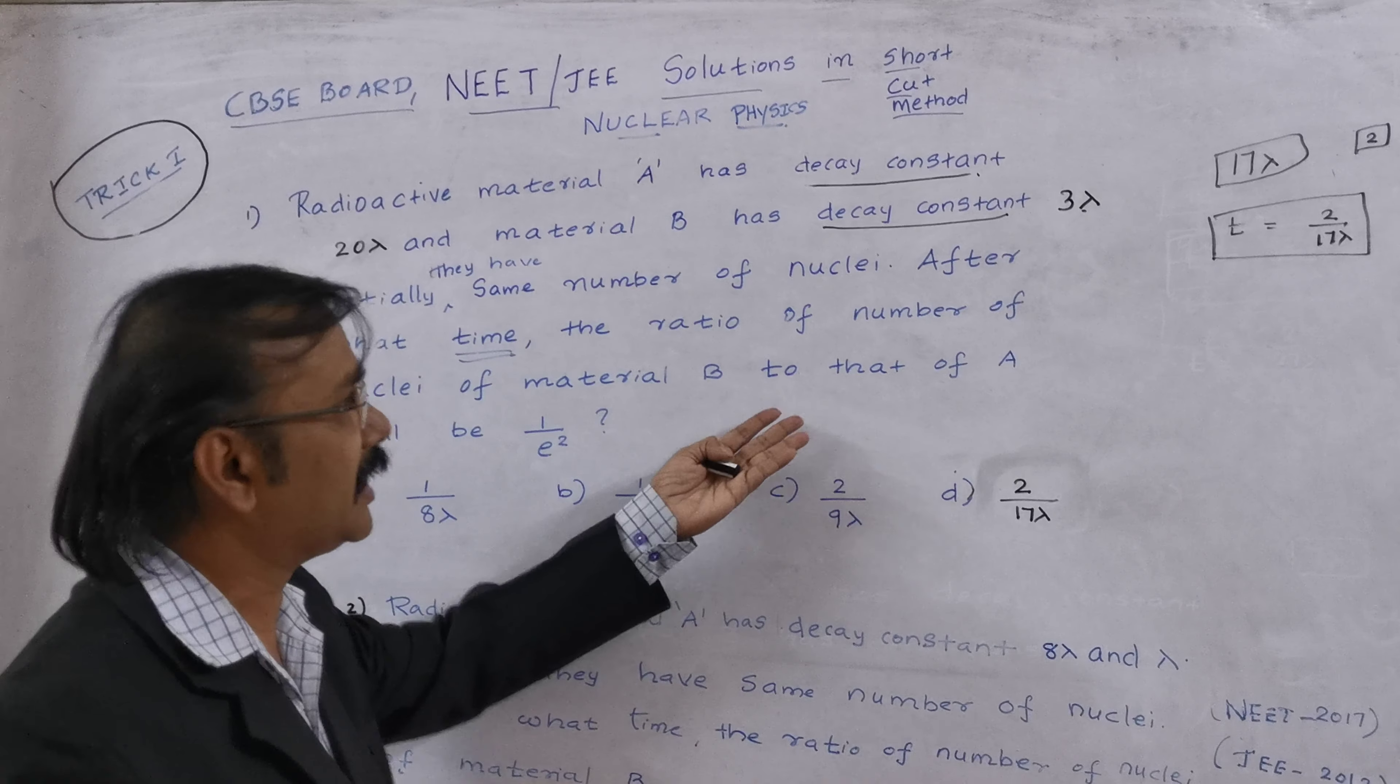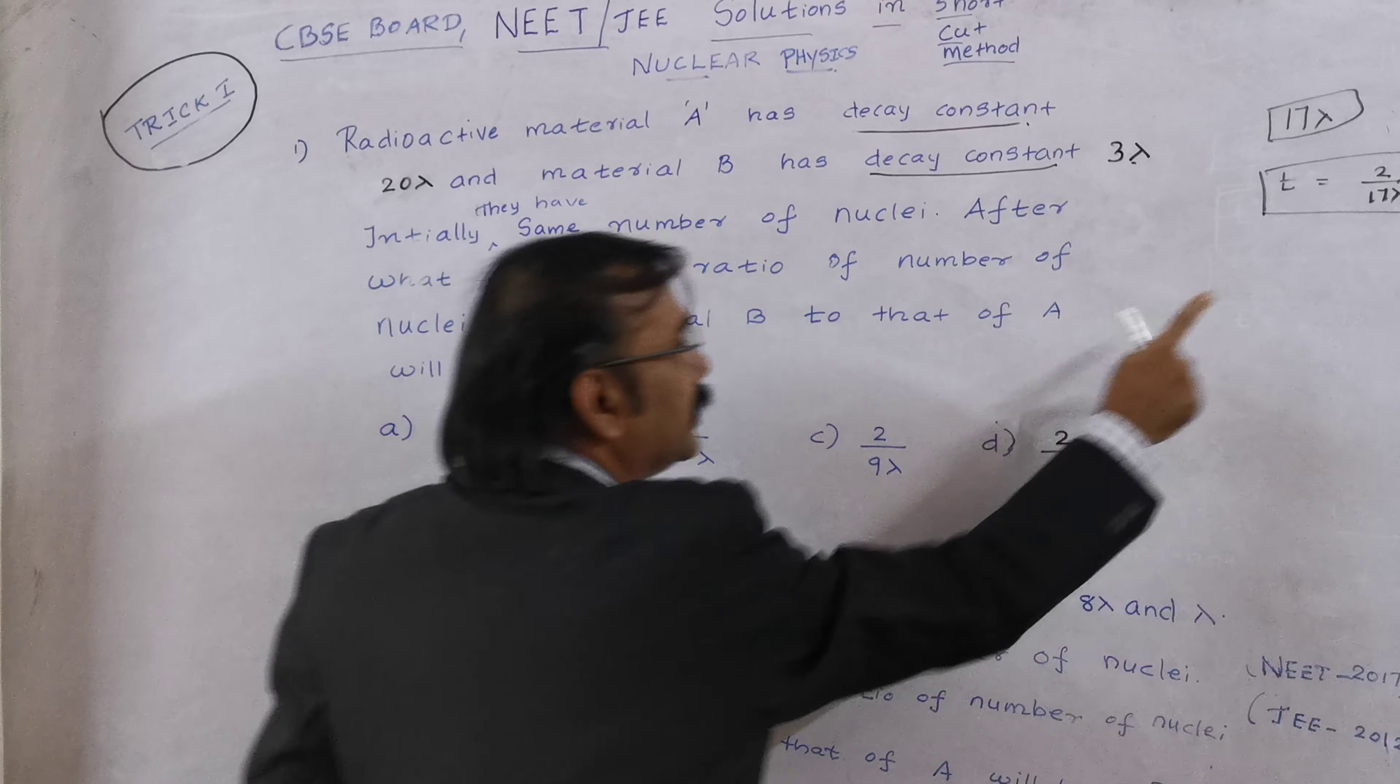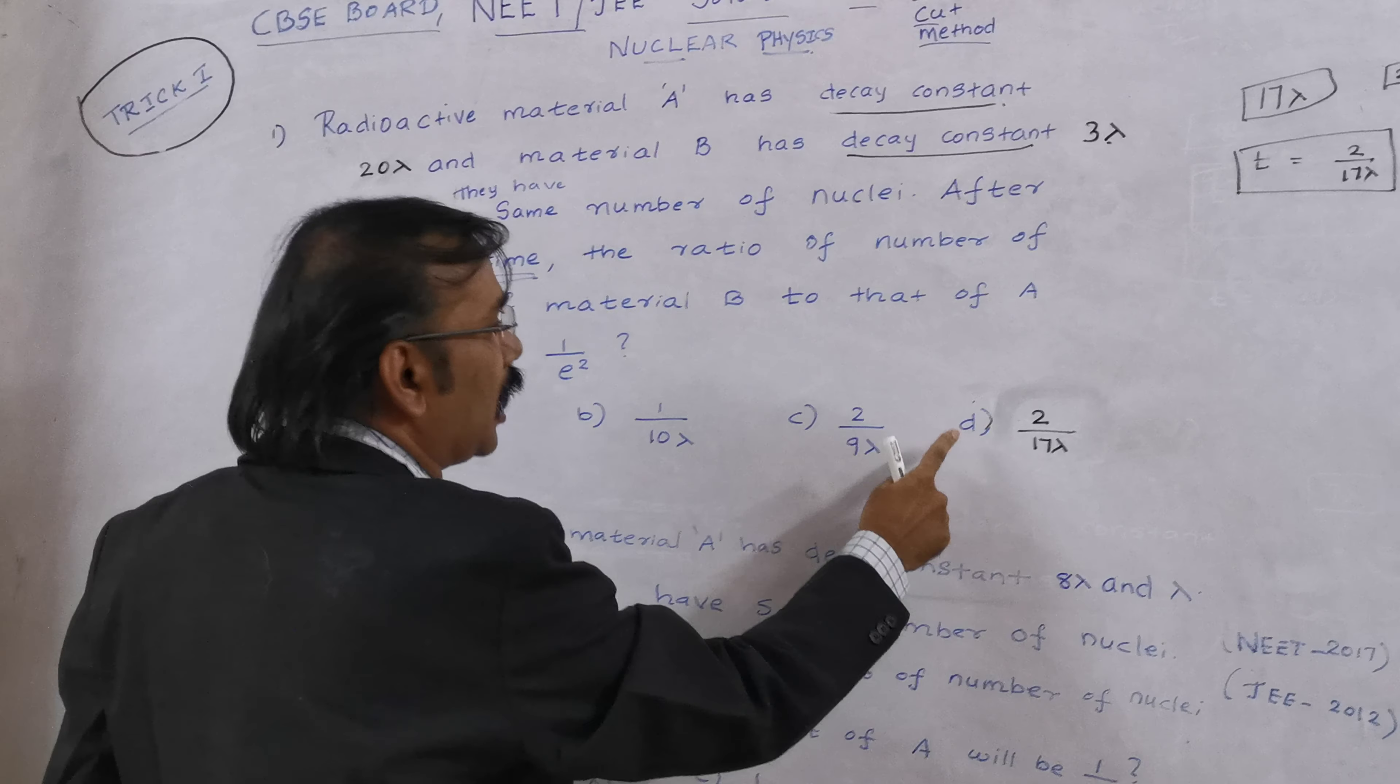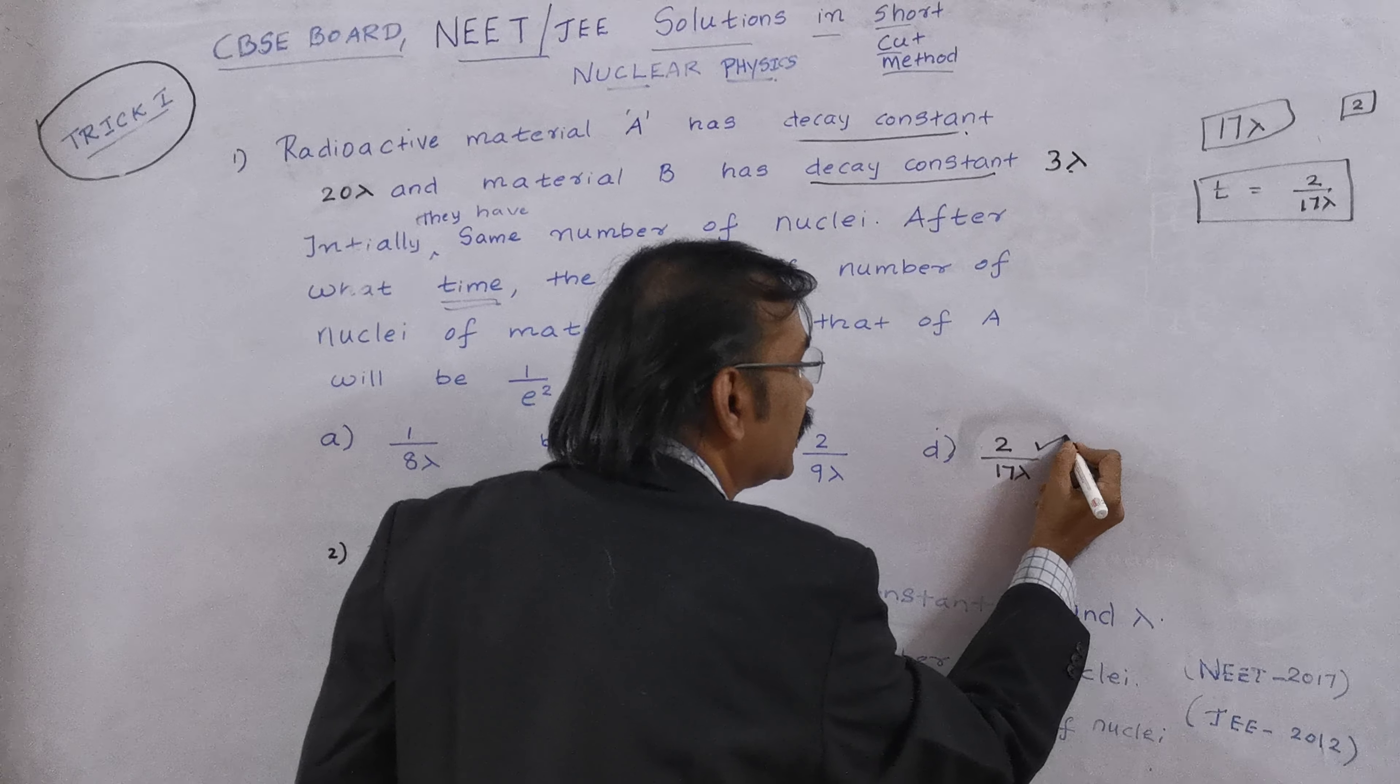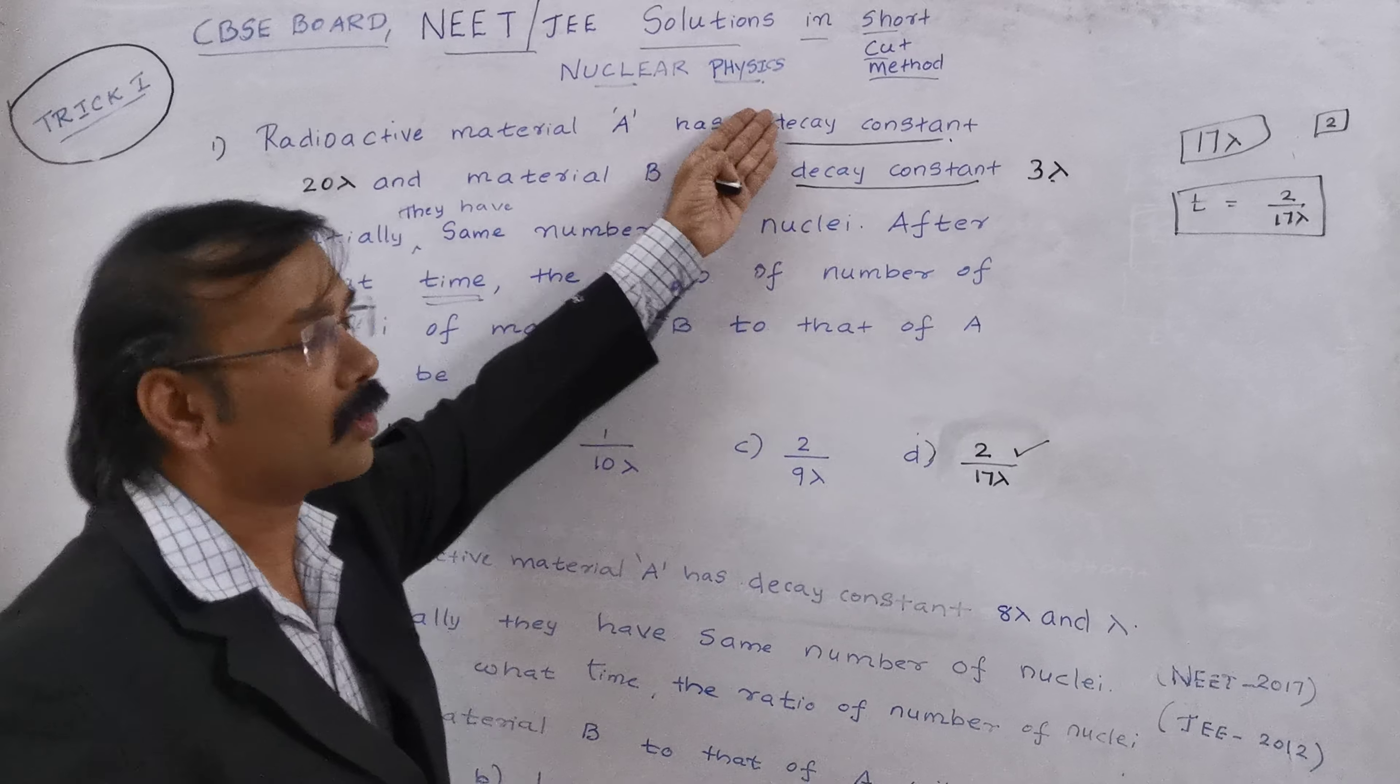Are you happy now? So let us go with the answer whether it is there or not. See the option here, 1 by 8 lambda. See the option here, it is 2 by 17 lambda. No. B, 1 by 10 lambda. Here 2 by 17 lambda. No. 2 by 9 lambda. Here 2 by 17 lambda. It is also not the correct answer. Now the last option is 2 by 17 lambda. Here also we got the same answer. Then the option is 2 by 17 lambda. Now are you happy now? Without using any formula, without knowing any concept, we did the trick number 1, a magic trick of having two decay constants.